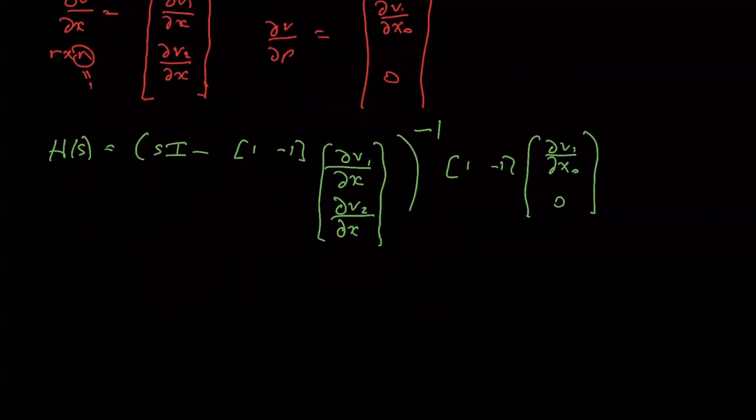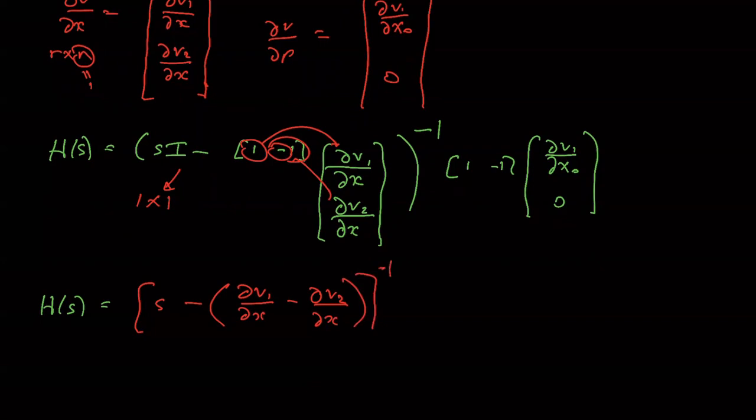Now the nice thing about this is a single state variable, so the inverse is really simple, it's just a reciprocal. So h of s equals, the identity matrix is just a one by one because we've just got one state variable, so s minus, and then it's dv1 divided by dx minus dv2 dx to the minus one.